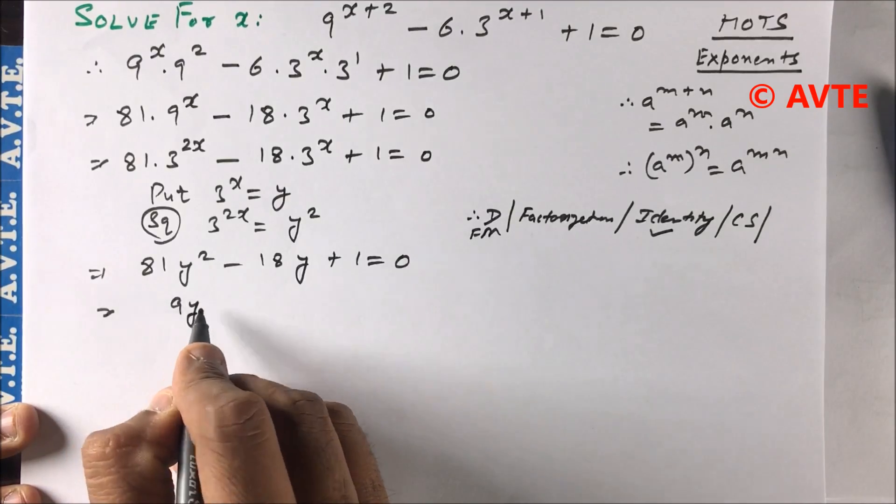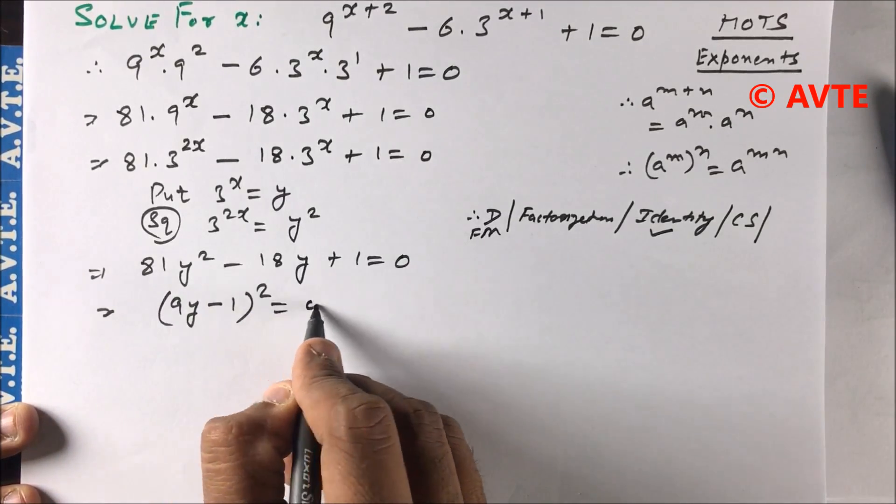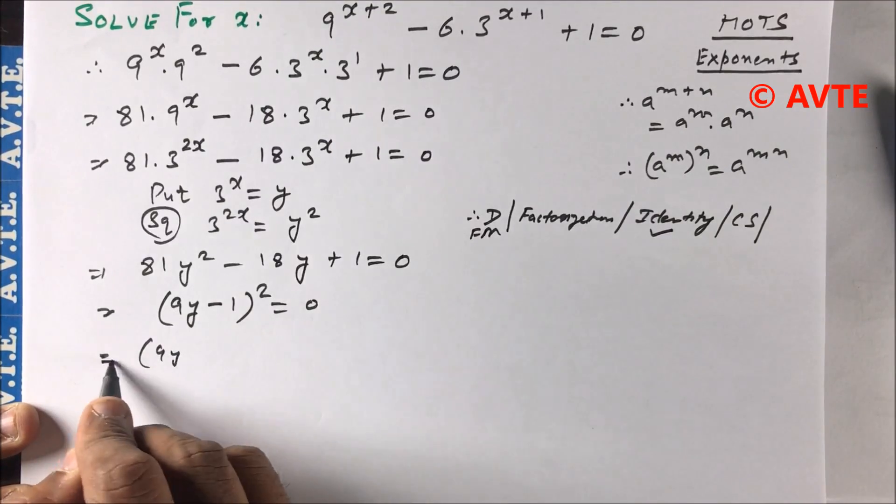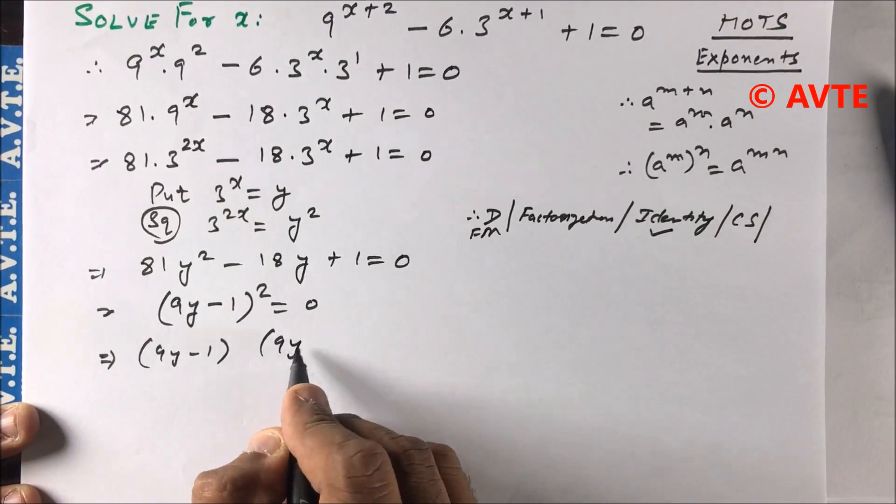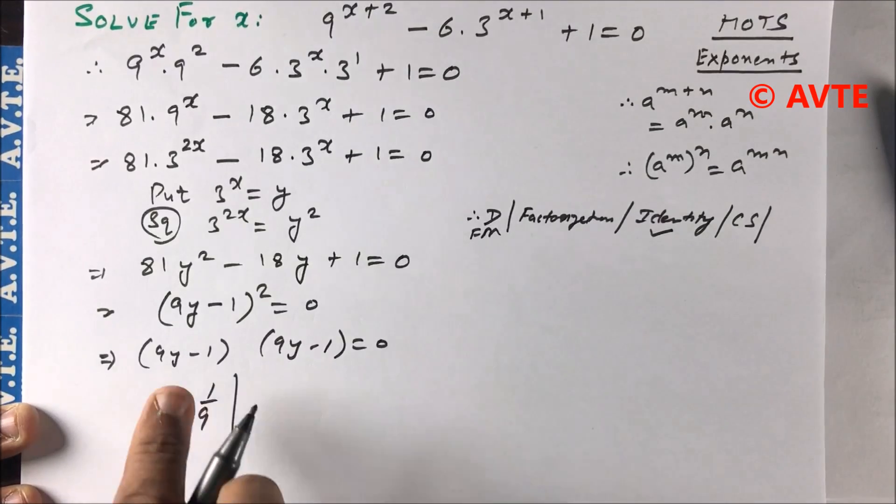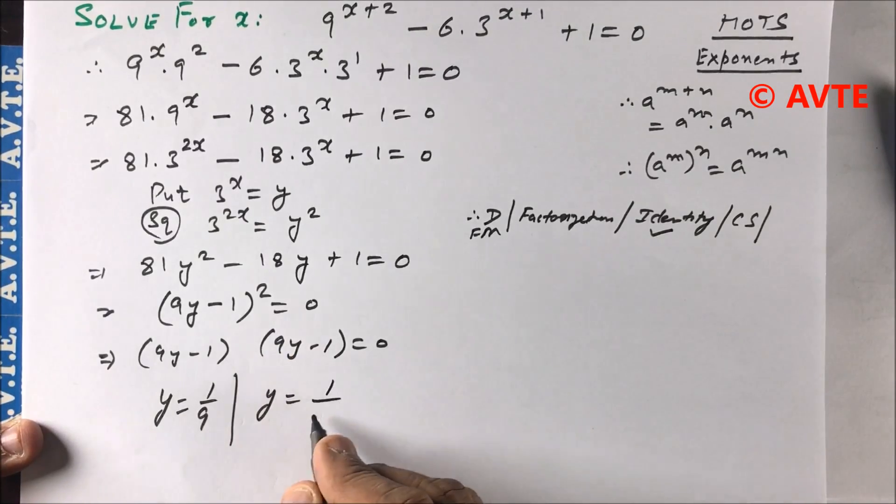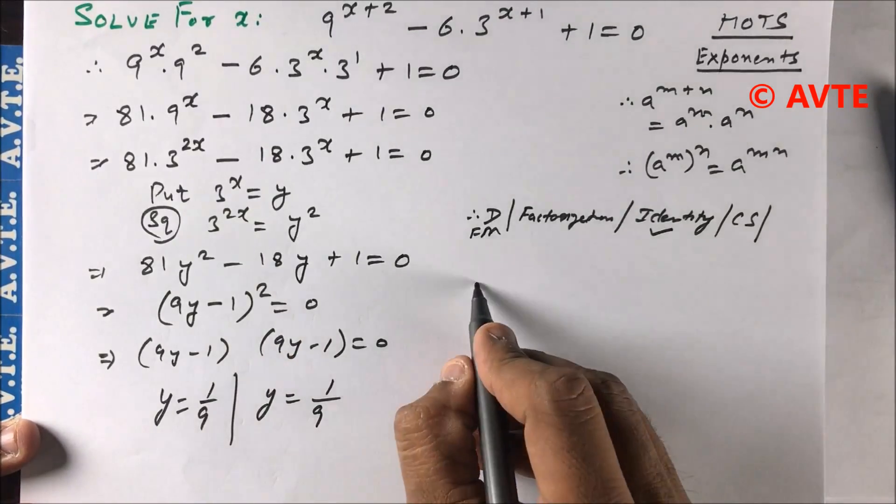So it becomes (9y - 1)² = 0. That is (9y - 1)(9y - 1) = 0. So y = 1/9. The product of two things is 0, so either of them is 0. These are repeated roots, so we can take any one.